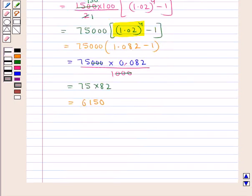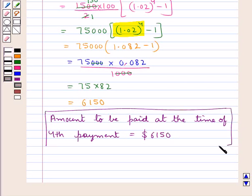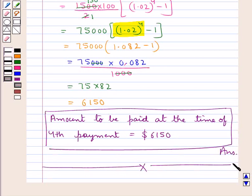The amount to be paid at the time of fourth payment is equal to $6,150. This is our final answer. This completes the session. Hope you have understood the solution of this question.